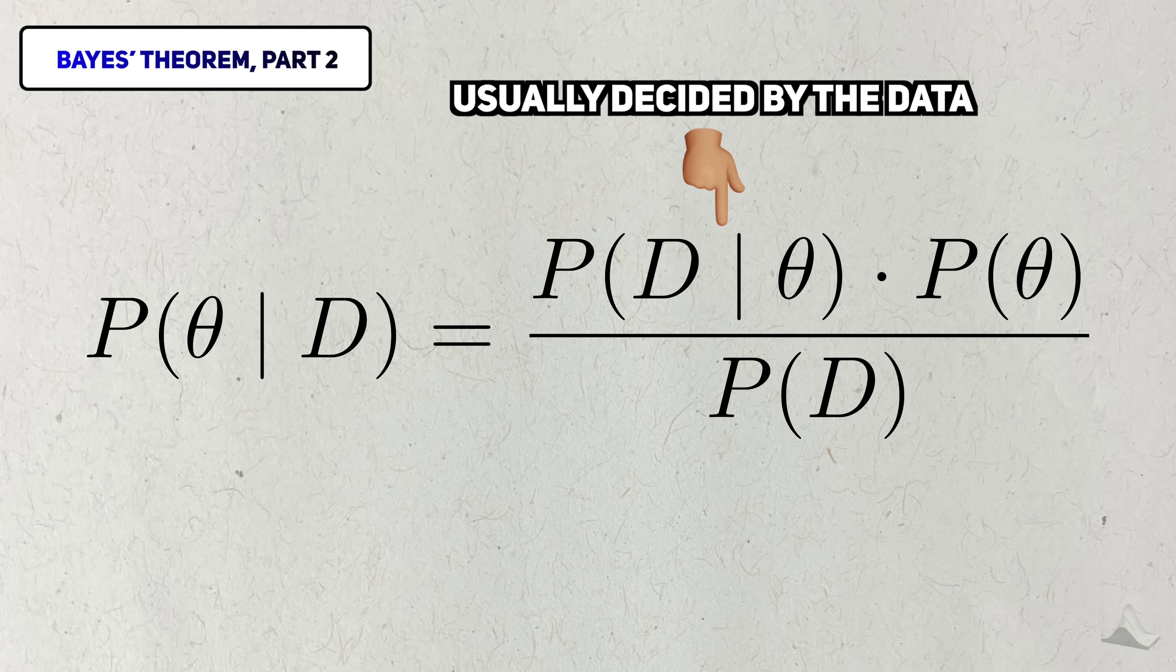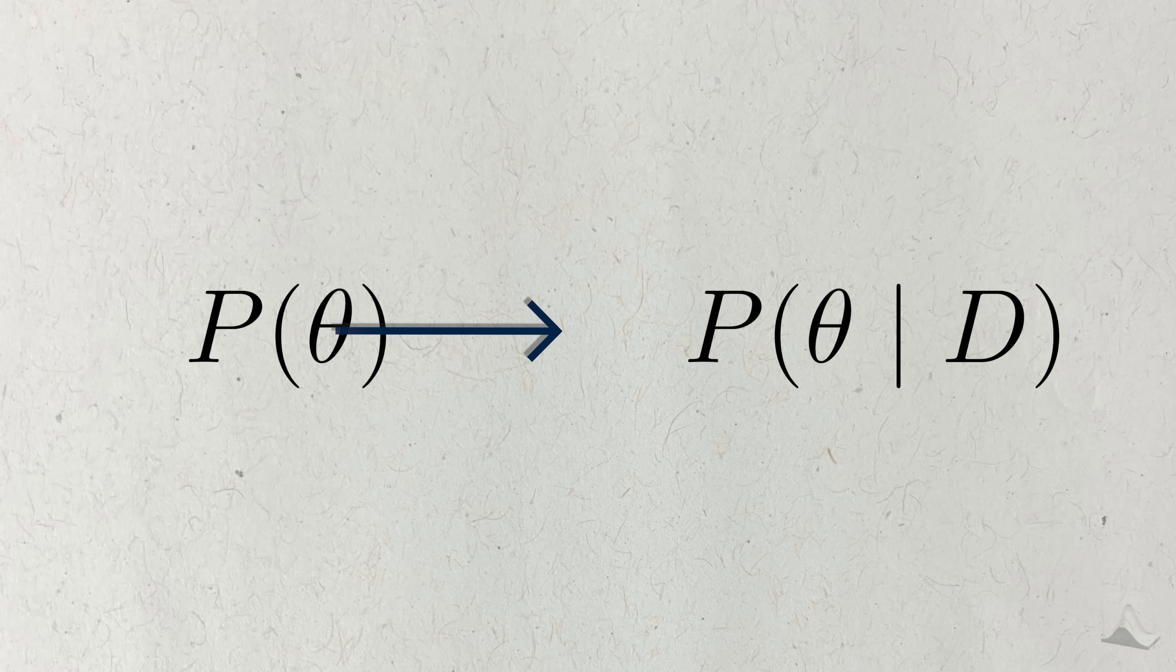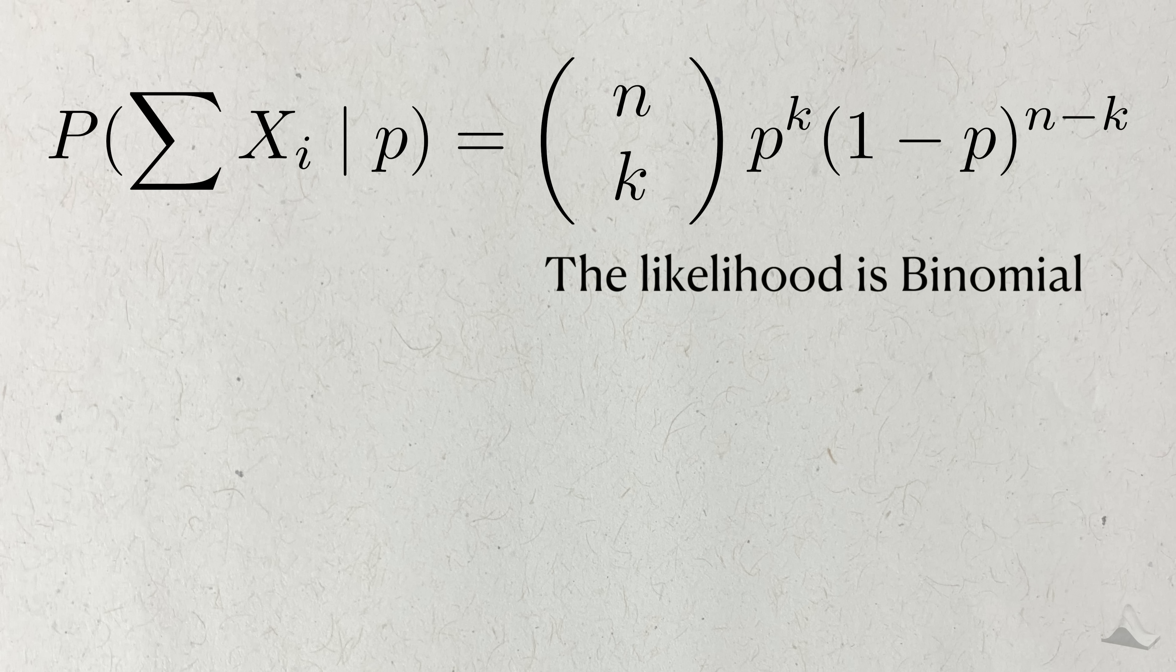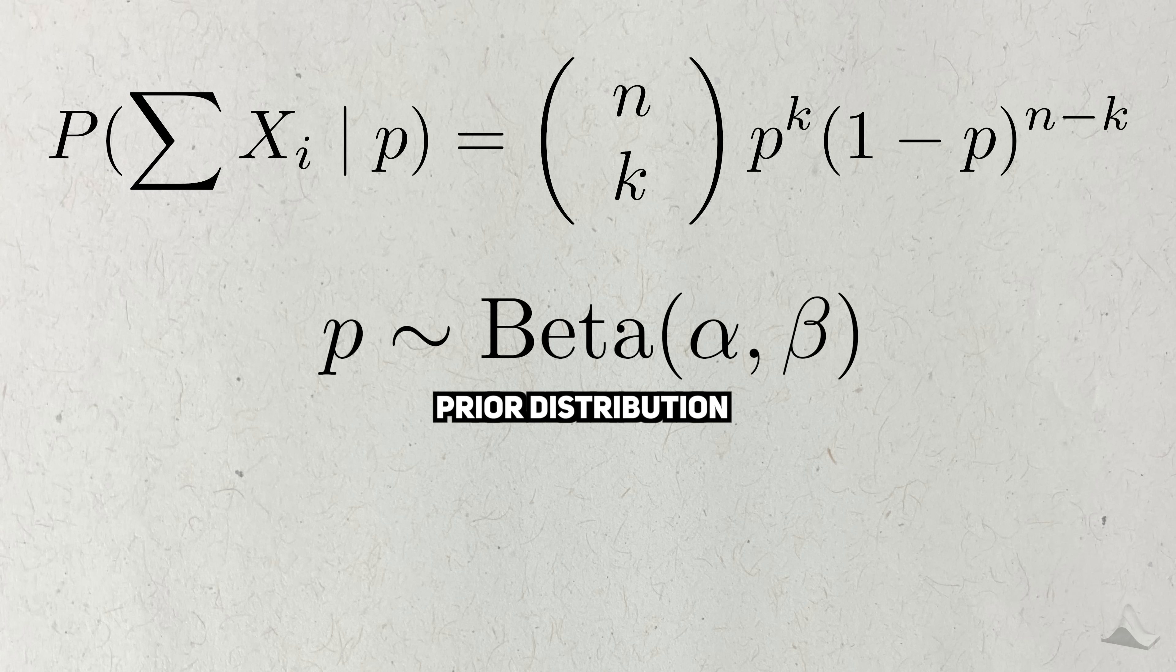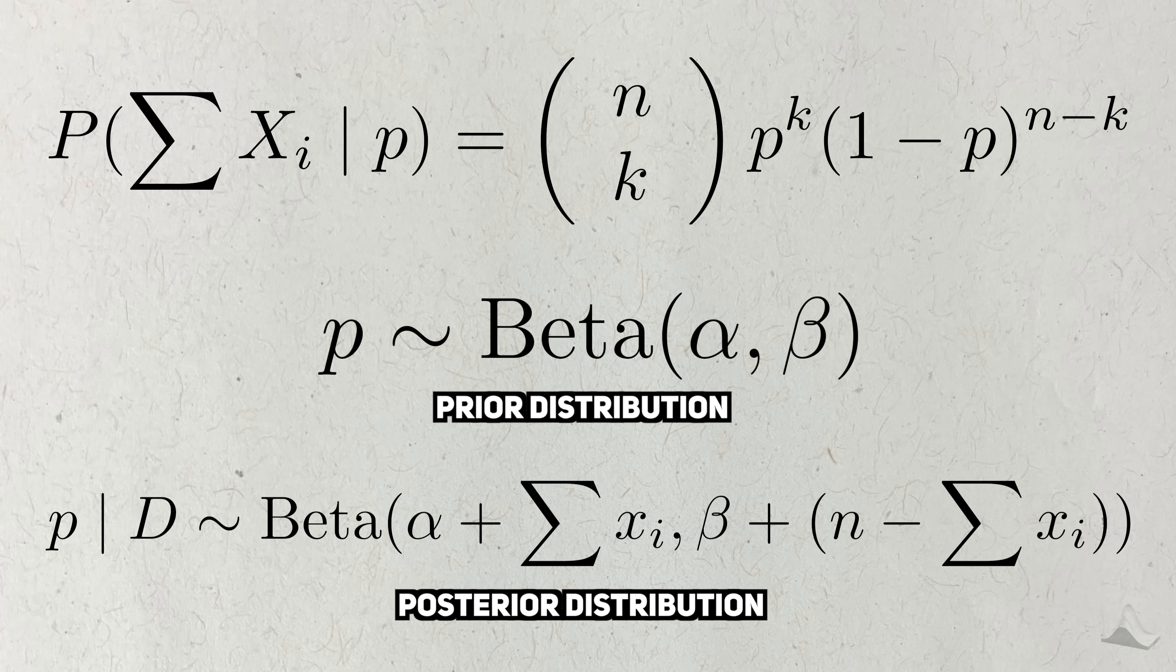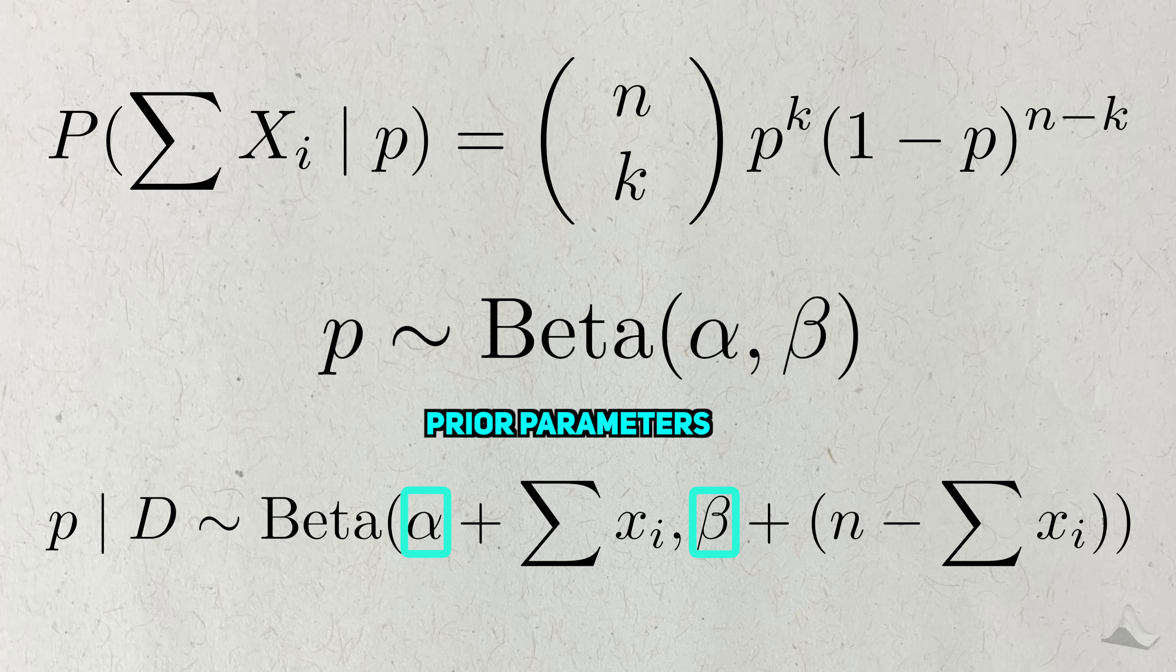The likelihood is usually decided by the data, but we can choose our prior. If chosen carefully, it's possible to get an easy expression for the posterior distribution. As an example, let's consider the case where the data comes from a binomial distribution. If we make our prior on the response rate a beta distribution, then it can be shown that the posterior distribution will also be a beta distribution with updated parameters. You can see that both the prior parameters and the data influence the parameters of the posterior distribution.